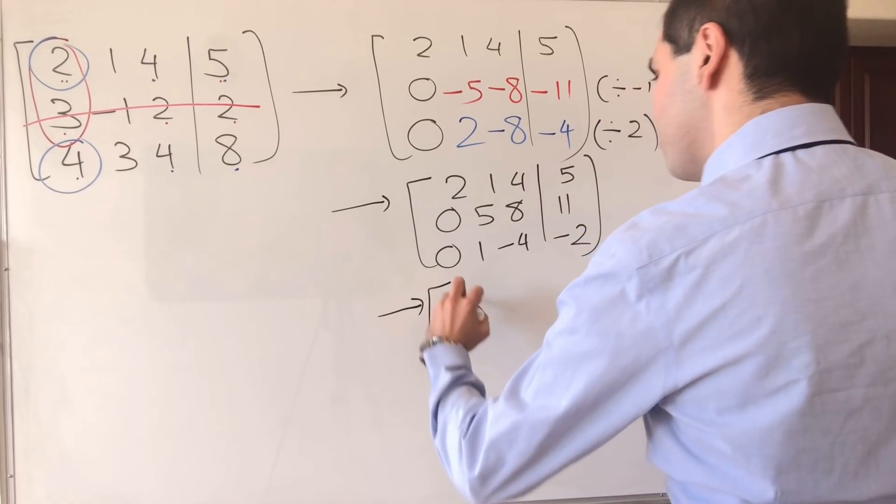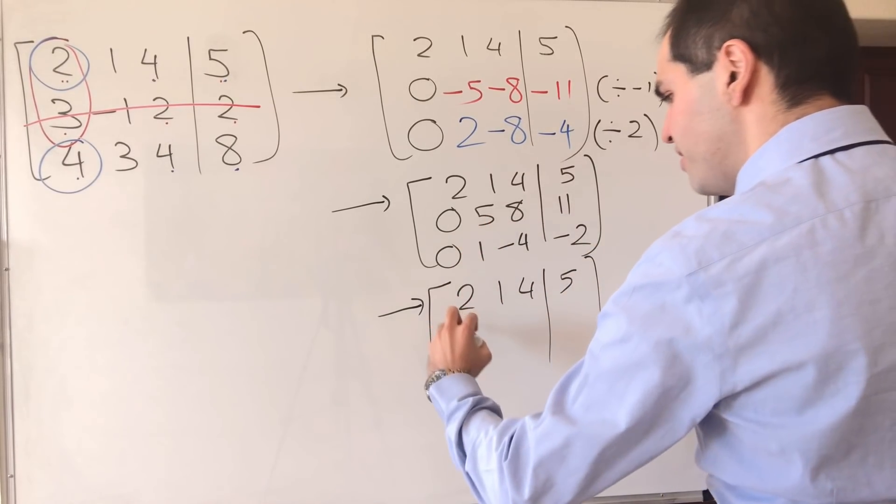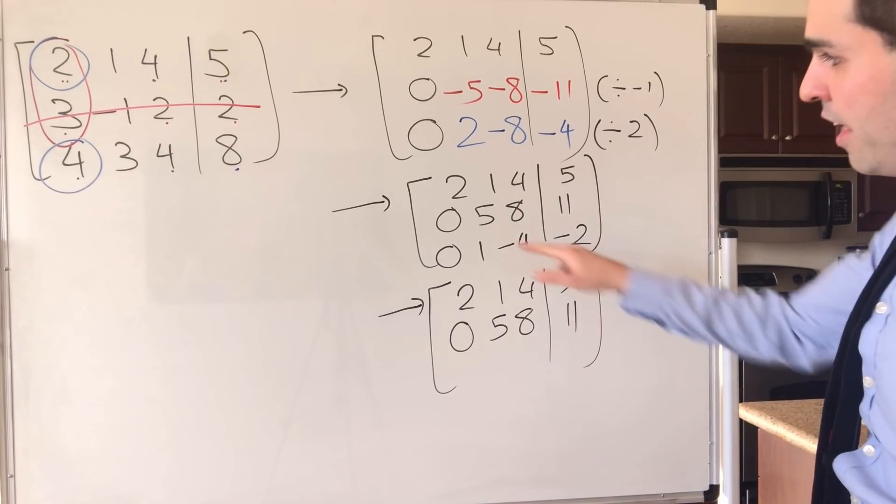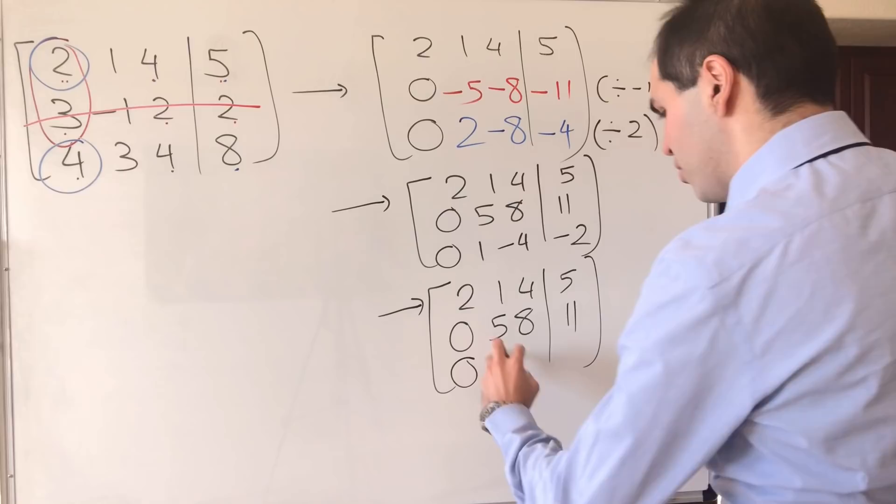So let's do 2, 1, 4, 5. And then keep the second row, 0, 5, 8, 11. And then, the stuff below the 5, you make it 0. So 0, 0.